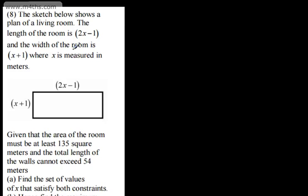In this video, we're going to do an exam-style question on inequalities. This is question number 8. We're told the sketch below shows a plan of a living room. The length of the room is 2x minus 1 and the width of the room is x plus 1, where x is measured in meters.